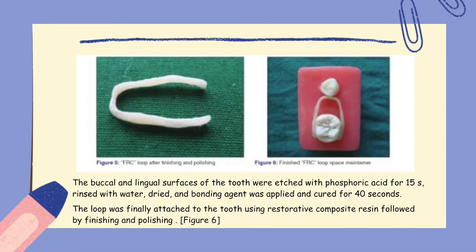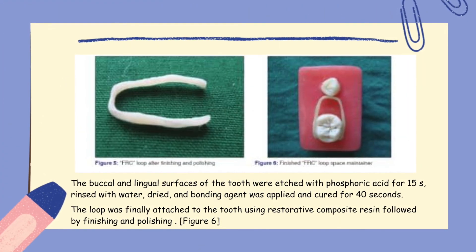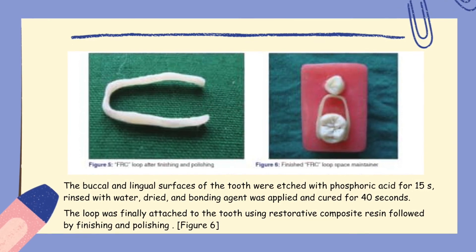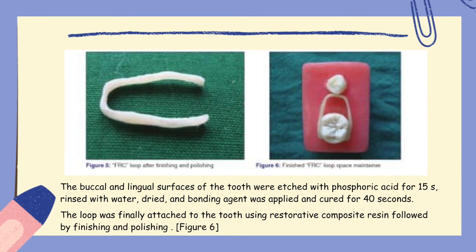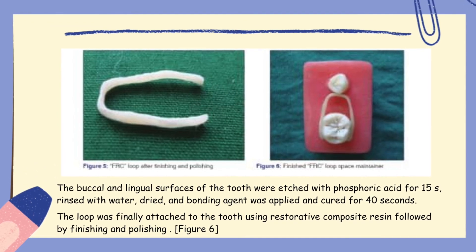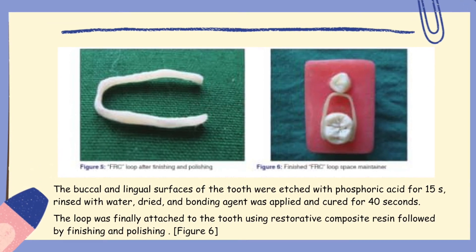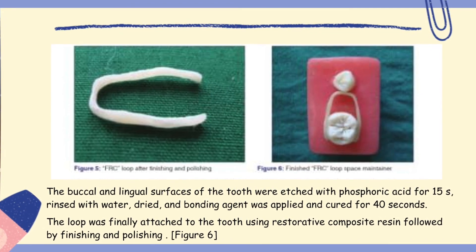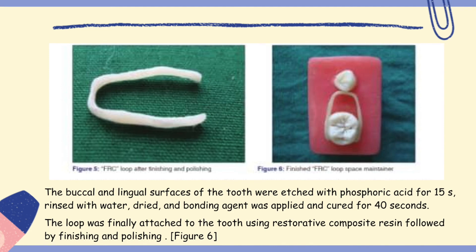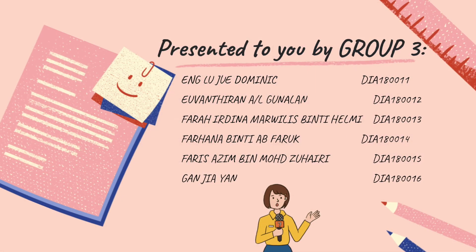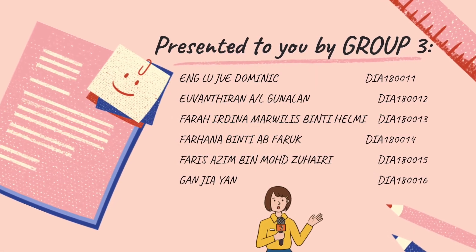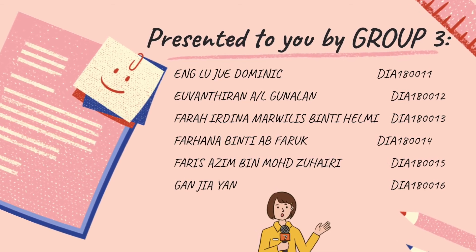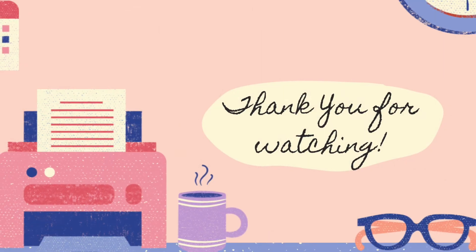Finally, the buccal and lingual surface of the tooth was etched with phosphoric acid for 15 seconds, rinsed with water, dried, and then the bonding agent was applied and cured for 40 seconds. The loop was finally attached to the tooth using restorative composite resin, followed by finishing and polishing, as shown in figure 6. That is all from us. We hope everyone can understand, and thank you for watching.